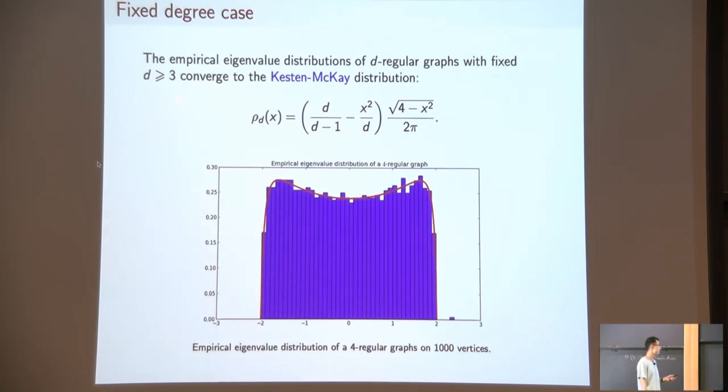In this case, the empirical eigenvalue distribution no longer converges to the semicircle distribution. It converges to the Kesten-McKay distribution, given by d over (d minus 1 minus x squared) over d times the semicircle distribution. Here's a four-regular graph with 1,000 vertices. You can see it matches pretty well with the Kesten-McKay distribution.